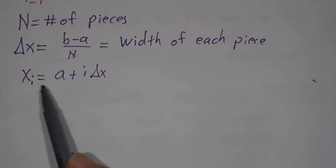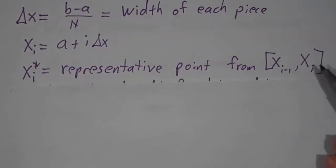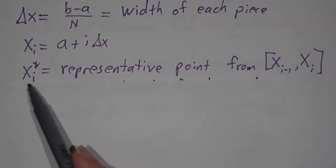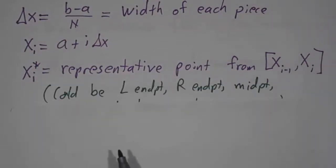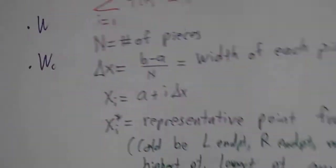And then we have a bunch of points, a plus i delta x, and we've divided things into intervals, and the ith interval runs from xi minus 1 to xi, and then from each interval we pick a representative point. Could be the left end point, could be the right end point, could be the mid point, could be the highest point, could be the lowest point. It could be absolutely anything you want, and we add up the pieces.